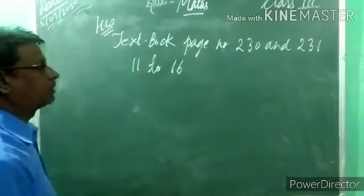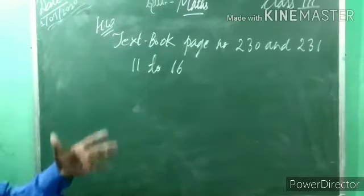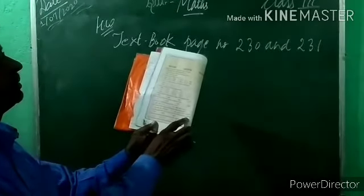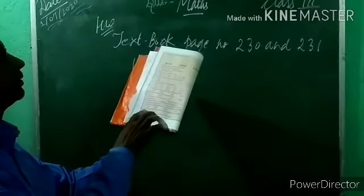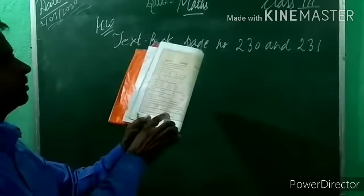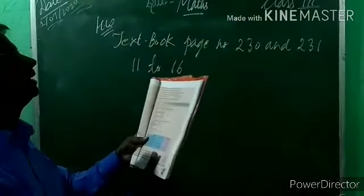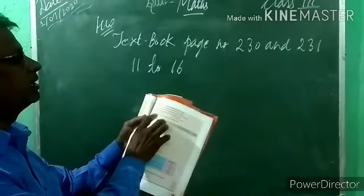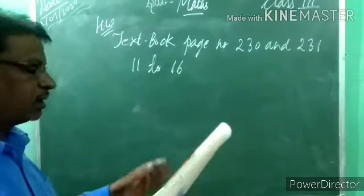Homework: textbook page number 230 and 231, examples 11 to 16. That is six examples in total. Example 11 — write predecessor and successor: I explained A, you have to do B, C, and D. Example 12 — build greatest and smallest number: I explained A, you do B and C. Example 13 I already explained; 14, 15, and 16 are based on the same pattern — do them with rough work. Examples 17, 18, and 19 I already explained. Do properly — don't make mistakes.